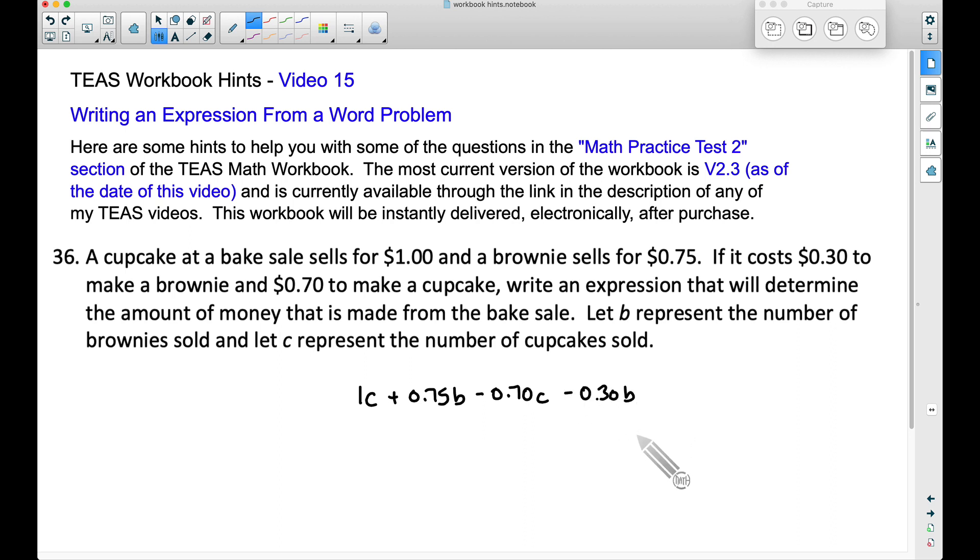And now what we want to do here is combine like terms. They're going to sell the cupcake for a dollar, but it costs them 70 cents to make it. If we combine these like terms here, one dollar minus 70 cents is going to be 30 cents. So technically speaking, they're going to make a 30 cent profit off of every single cupcake they sell. Think about it. They're selling it for a dollar, it costs them 70 cents to make it, so they're going to make 30 cents on every single cupcake.